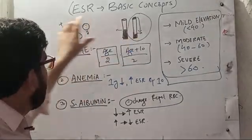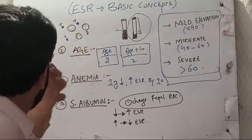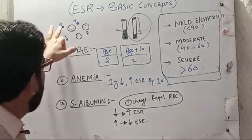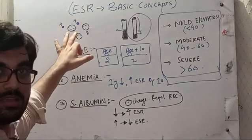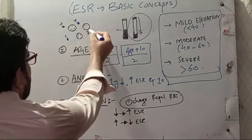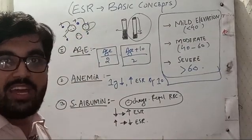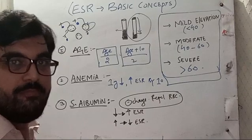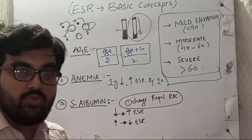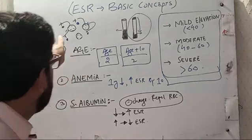Coming toward the basic concept: RBC has negative charge, so one RBC repels another RBC. But there are proteins in the blood which have positive charges. These proteins neutralize the negative charges. When these negative charges on RBC are neutralized by the proteins in the blood, the RBCs combine together and form a stack called rouleaux formation.